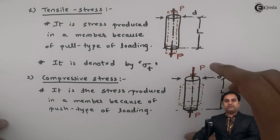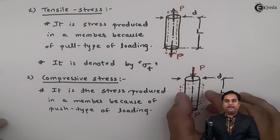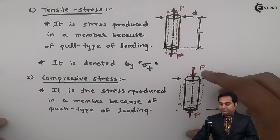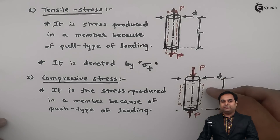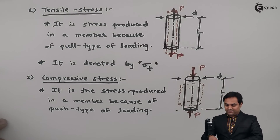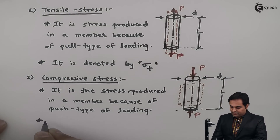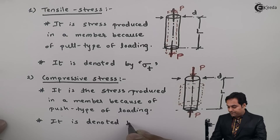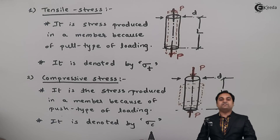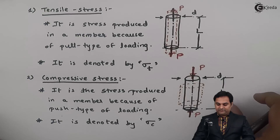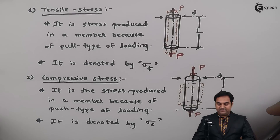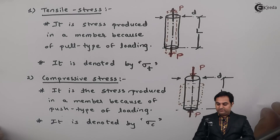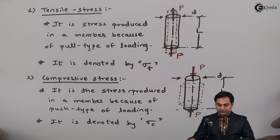Because of this push type of loading, the diameter of the member will go on increasing and the length will go on decreasing. Compressive stress is denoted by sigma_c, where c is the suffix for compressive stress.